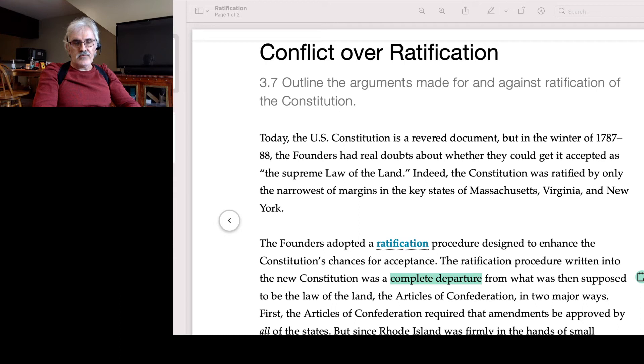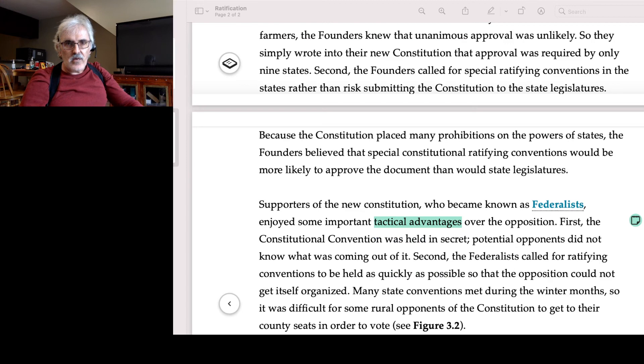First, the Articles of Confederation required that amendments, meaning changes, to the Articles of Confederation be approved by all of the states - all of them. But since Rhode Island was firmly in the hands of small farmers, the Founders knew that unanimous approval was unlikely. So they simply wrote into their new Constitution that approval was required by only nine states.